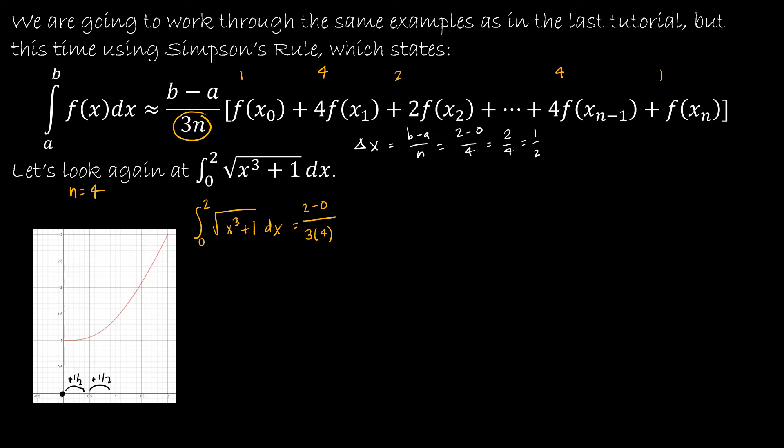That means I'm going to take f of 0 and 4 f of 1 half and 2 f of 1 and 4 f of 3 halves and f of 2. This should be approximately equal to because it is an approximation. As I continue, 2 minus 0 is 2 and 3 times 4 is 12, so I have 2 over 12 or 1 over 6.